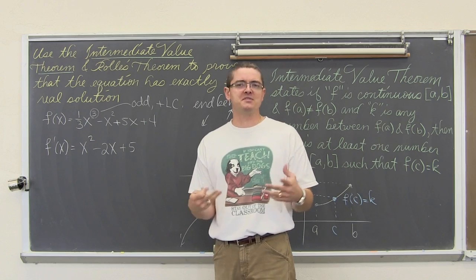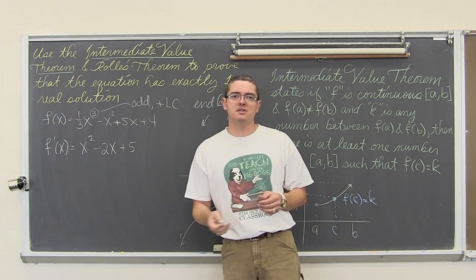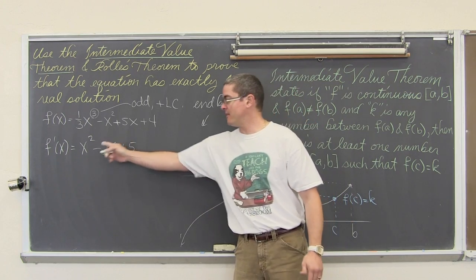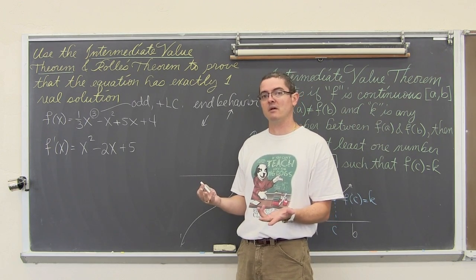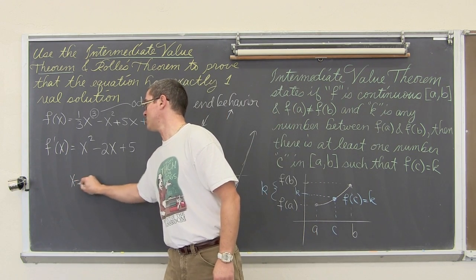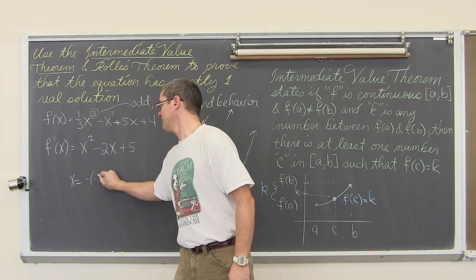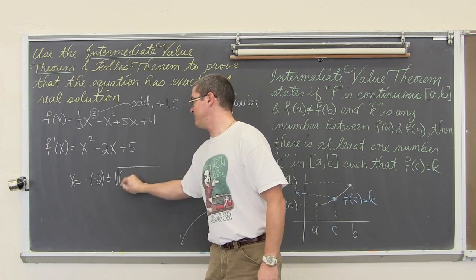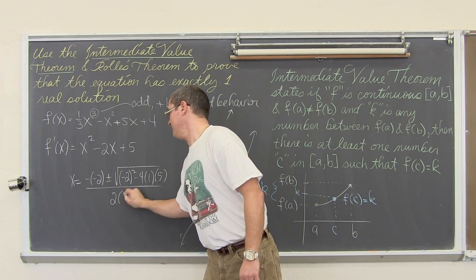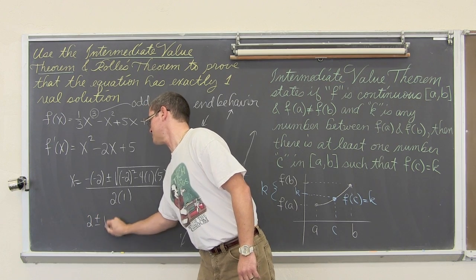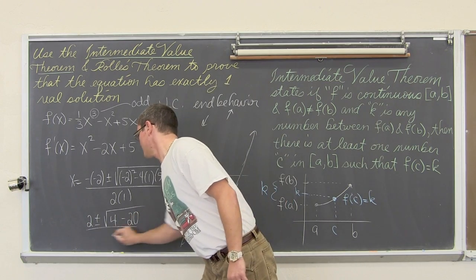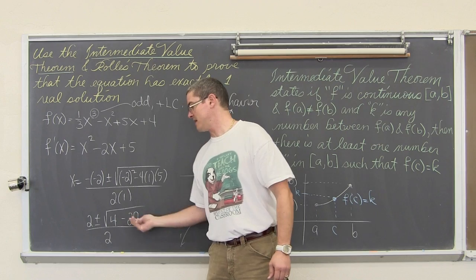Again, Rolle's Theorem is something about f prime of c equaling zero. So is there a way to get this quadratic equation equal to zero? Well, it is not factorable. There is no factors of 5 that add to the middle term of negative 2, so we are going to resort to doing the quadratic formula. So a is 1, b is negative 2, and c is 5. So we have x is equal to negative b plus or minus the square root of b squared minus 4ac all over 2a. And that becomes 2 plus or minus the square root of, this is going to be negative 2 squared which is 4, minus 20 over 2.